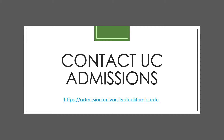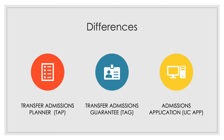We also encourage you to meet with a counselor regularly to update your educational plan and ensure that you meet the eligibility for the University of California. Today we will focus on the Transfer Admission Planner or TAP, and talk briefly about the Transfer Admissions Guarantee or TAG. Note that this does not replace the admissions application — all students interested in applying to the University of California still must complete the admissions application.